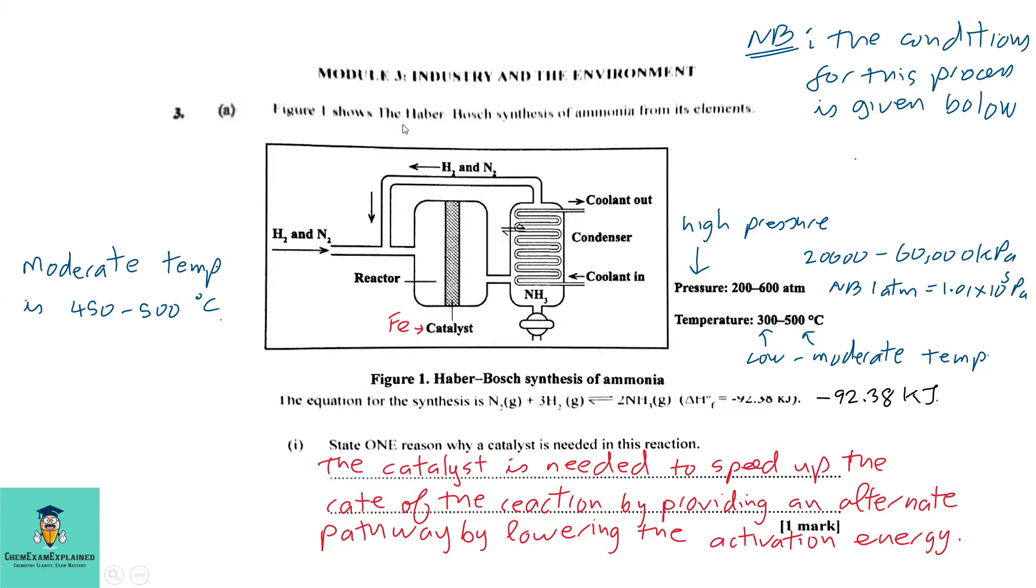Question 3a: Figure one shows the Haber-Bosch synthesis of ammonia from its elements. Let us examine the diagram. You can see that we have hydrogen and nitrogen going into the reactor. After they react and produce the ammonia, it is cooled by the condenser. Any unreacted gas is replaced back into the reactor to produce more ammonia. You can see here that our pressure is 200 to 600 atmosphere, which is 20,000 to 60,000 kilopascals, so the pressure is high. The temperature is low to moderate.